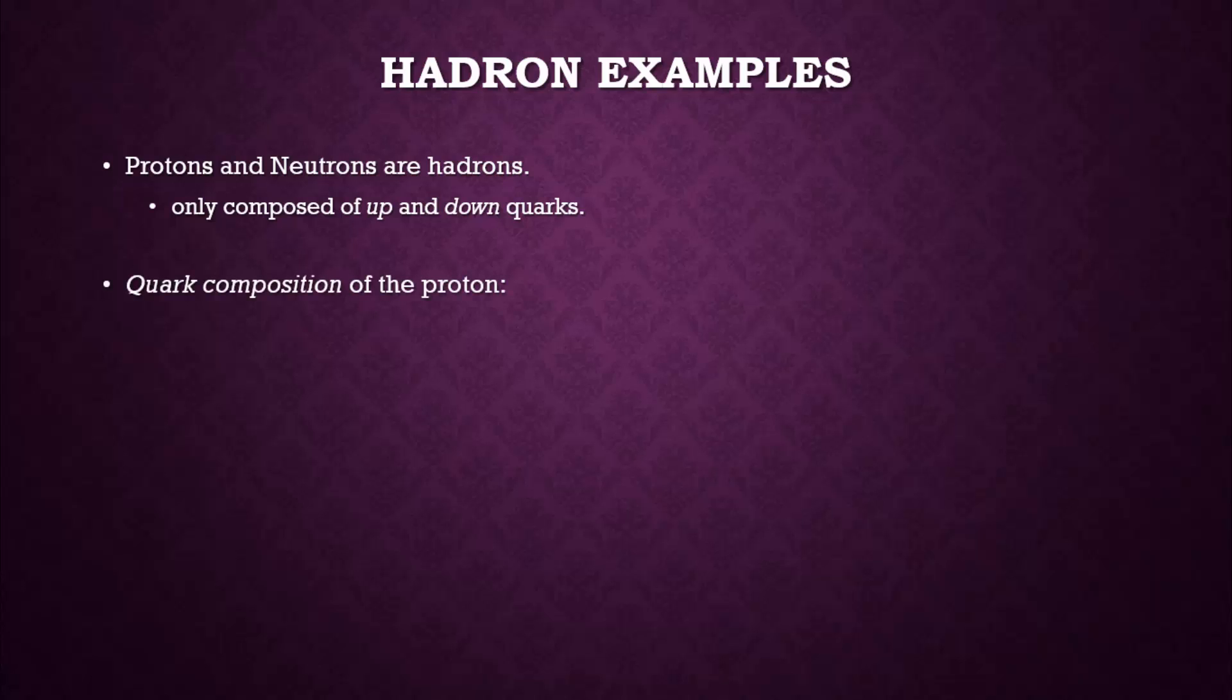Let's take a look at the quark composition of the proton. In order to end up with the charge of the proton with which we are familiar, the proton must be composed of two up quarks and a down quark. This could be written as UUD, and this gives us positive one elementary charge.